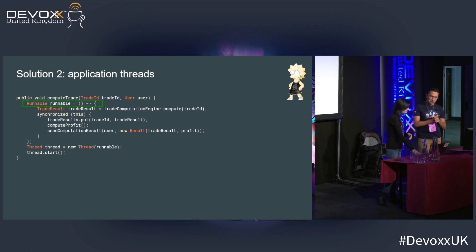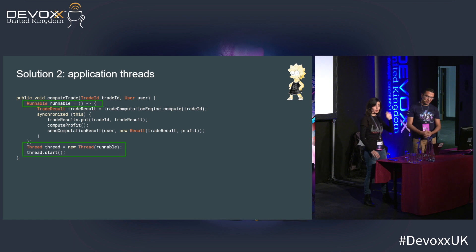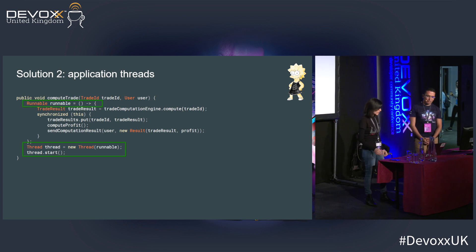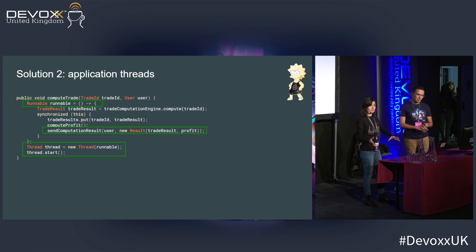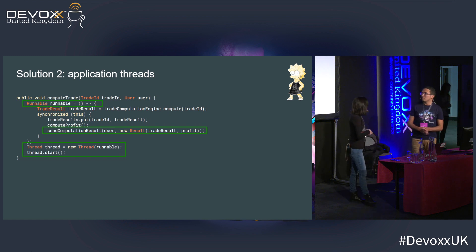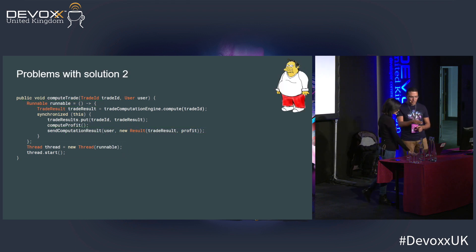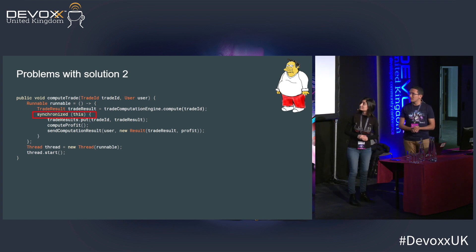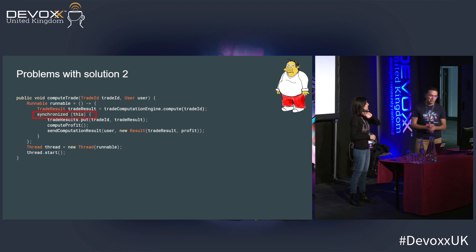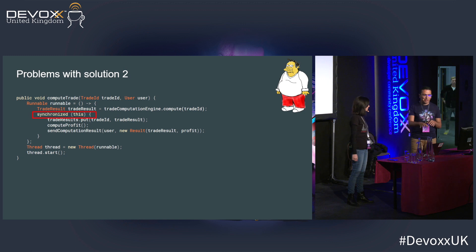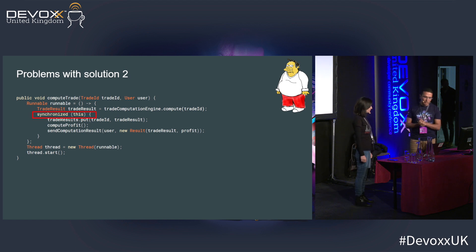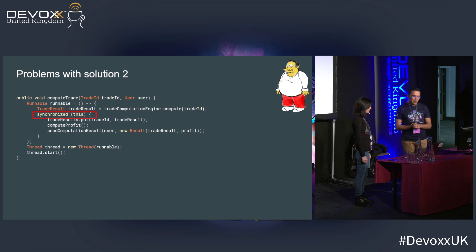By doing that, I can no longer return a result right away on the compute trade method since it's no longer blocking and synchronous. So I also added a send computation result notification to let the trader know when the result is done. But there's a small bug here — we synchronize on the same object as the runnable. This basically happens with copy-paste. In this case the lock is pointing on the runnable, and we've actually lost our thread safety. We need to correct this first.